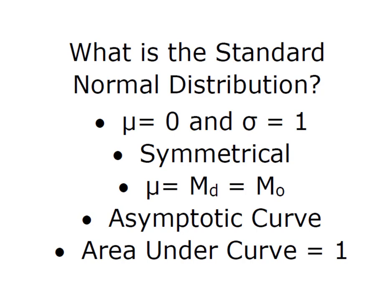We know it's symmetrical because the mean, the median, and the mode are all the exact same value. It is an asymptotic curve in that the curve runs to the horizontal axis, getting ever and ever closer, but never actually touching. And in theory, the curve runs from positive to negative infinity.